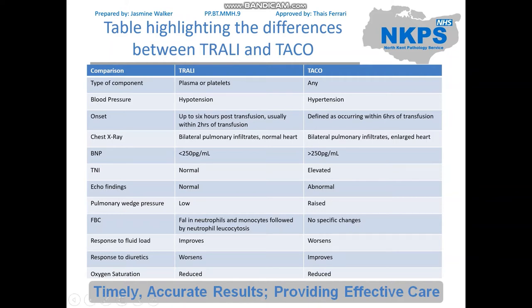On chest X-ray, you will expect to see bilateral pulmonary infiltrates in both. However, with TACO — as the name suggests — there's cardiac overload, so you'd expect an enlarged heart, whereas with TRALI the heart will be normal. The BNP in TRALI will be less than 250, whereas in TACO it will be greater than 250. Troponins will be normal in TRALI and elevated in TACO. The echo will be normal in TRALI but abnormal in TACO due to the cardiac involvement. Pulmonary wedge pressure will be low in TRALI and raised in TACO.